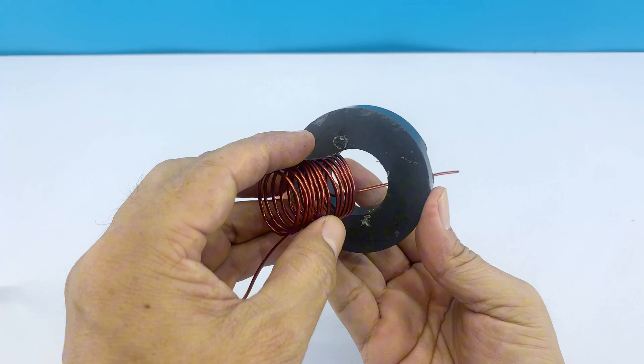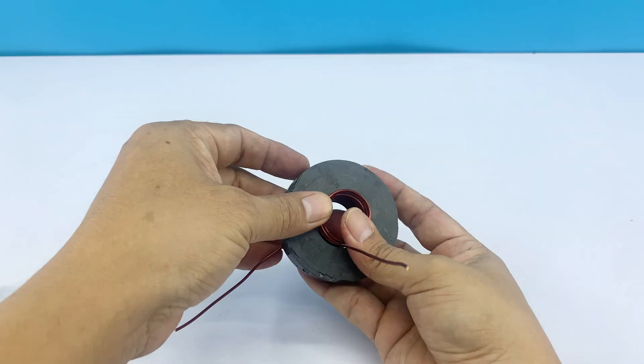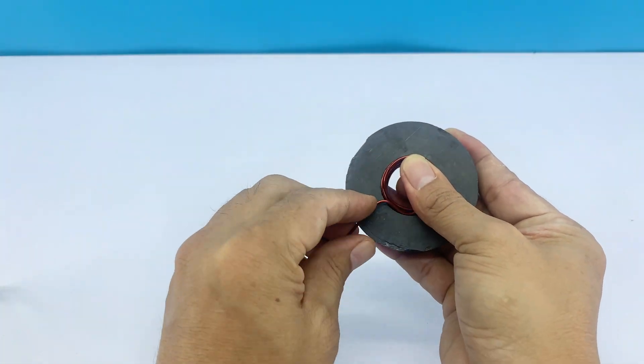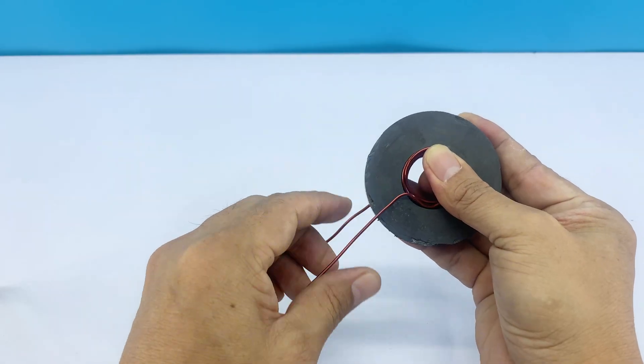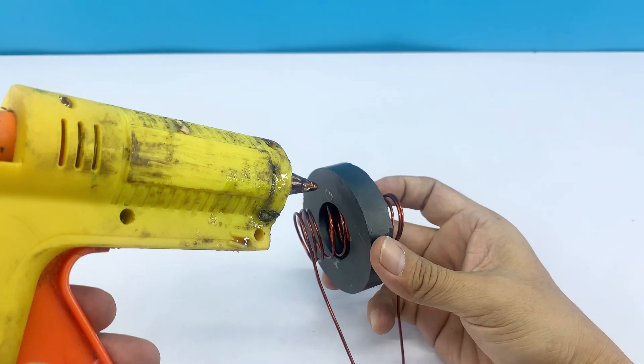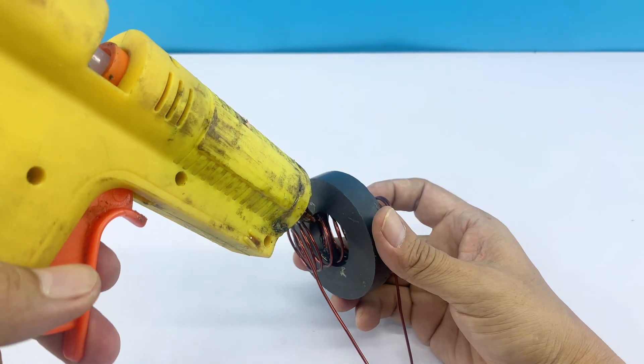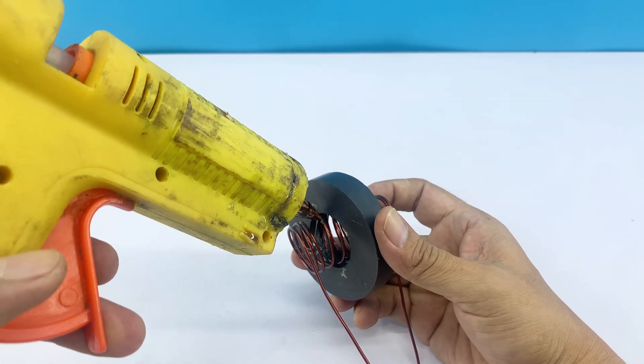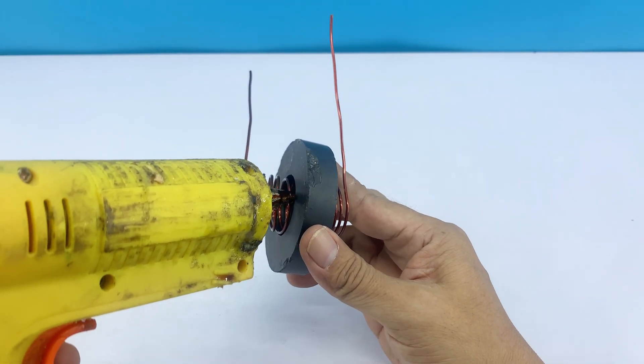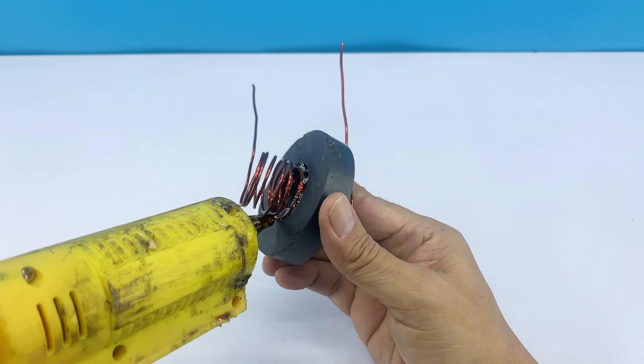After finishing the copper spring, I make sure to leave a short piece of wire extending from each end. This detail makes the next step much easier. Once the spring is placed correctly inside the hole of the magnet, I secure it with hot glue. The glue holds the spring firmly in place and prevents it from shifting or slipping out. It's a simple step, but ensures the whole structure stays stable and reliable. Paying attention to small details like this often makes a difference between something fragile and something that actually lasts.